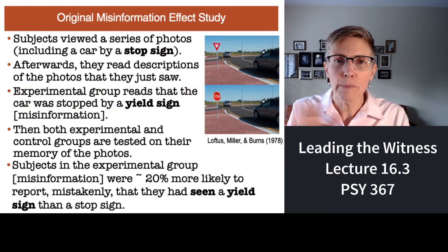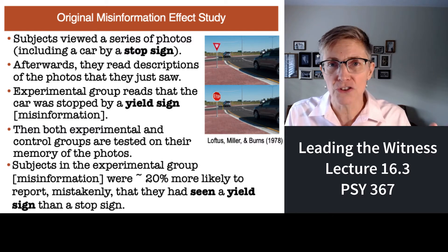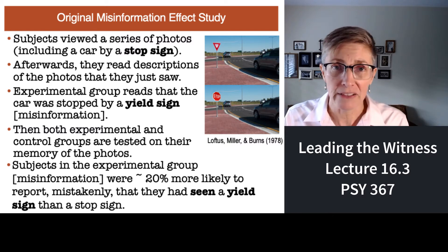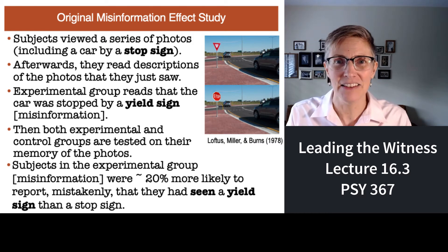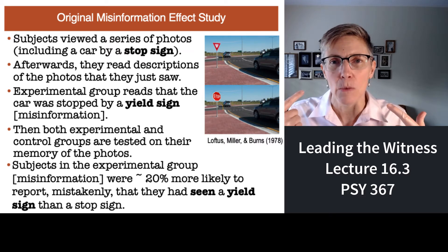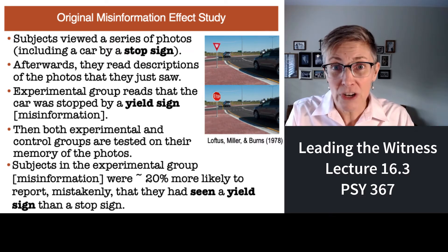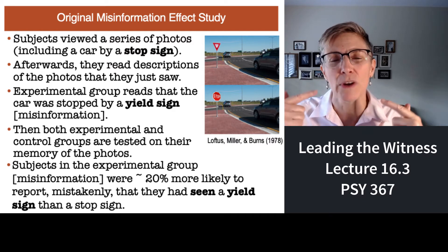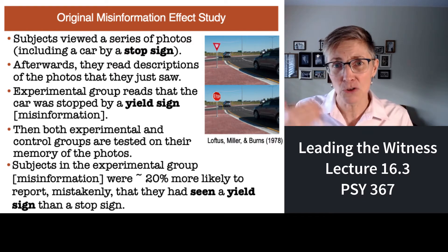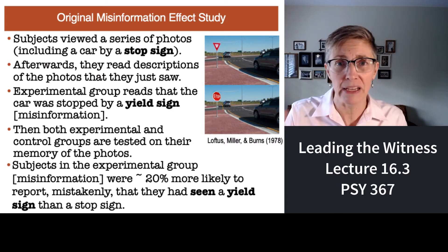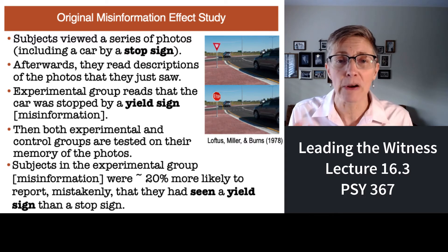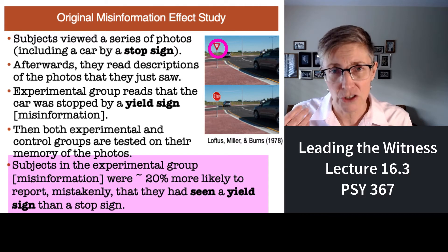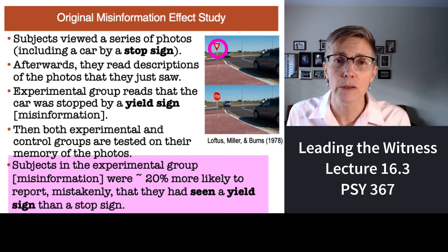Then your job is not to do anything with any more questions or texts, but to look at a new set of pictures — half of them you've seen before, and half of them you haven't. The key is one of those pictures depicts not what you saw originally, but depicts what you read about later. And what happens when you ask people to just pick the pictures that they saw originally? Subjects in the experimental group are 20% more likely to mistakenly say they previously saw the picture of the car by the yield sign.